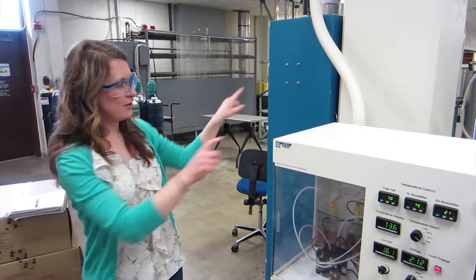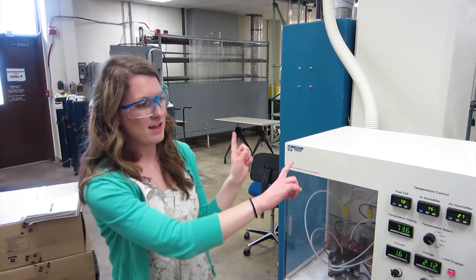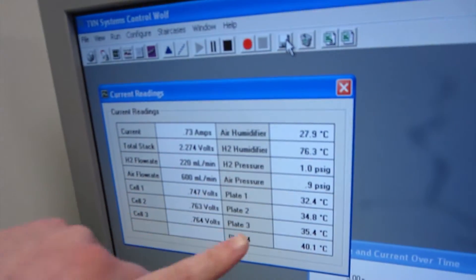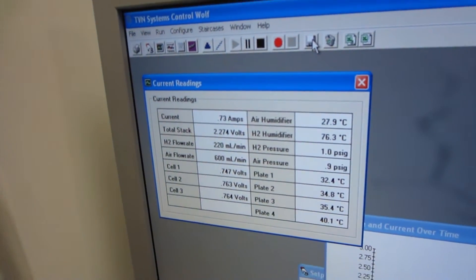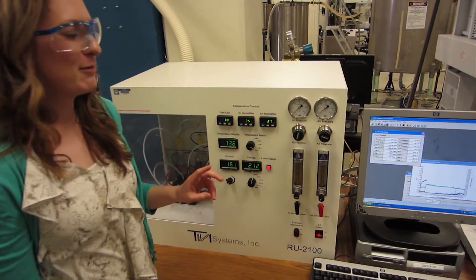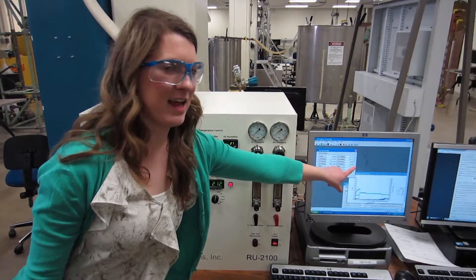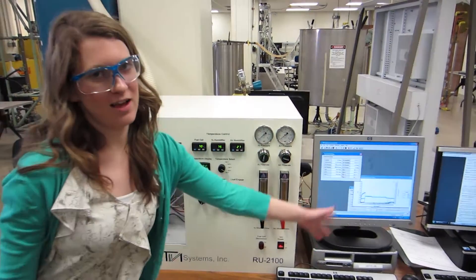These two have to be within like 0.5 psig of each other, more like 0.3 probably. And if your air is staying at 1 and your hydrogen is not getting up there, that means you're out of air and turn everything off immediately.